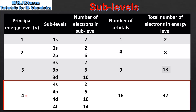Finally we have the n=4 energy level, which has a 4s, 4p, 4d, and 4f sublevel. The 4s sublevel can hold 2 electrons, the 4p sublevel can hold 6, the 4d sublevel can hold 10, and the 4f sublevel can hold 14 electrons. The total number of orbitals is 16, which can hold a maximum of 32 electrons.